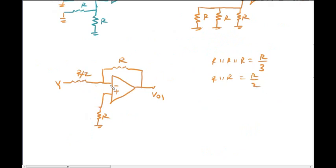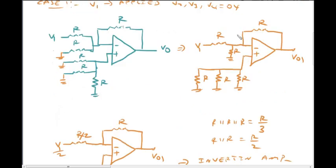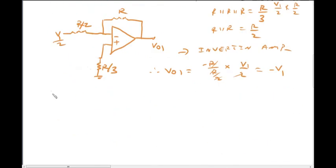The NET resistance is R by 2. Since the input is applied to the inverting terminal, this is an inverting amplifier. The inverting amplifier gain is minus RF by R1. Here RF is R and R1 is R by 2, so the Thevenin voltage is V1 by 2. Therefore, V01 equals minus V1.